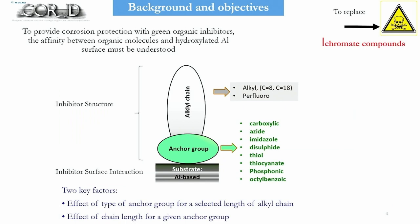For the M-ERANET project, our aim was to screen several families of potential inhibitors. We started from a very simple idea: we have the metal, which can be oxidized, and we have an anchor group — a chemical function responsible for attachment and anchoring to the surface — and then we have an alkyl chain responsible for forming a self-assembled layer to protect the metal from entry of corrosive species. We studied the key factors of the anchor group, its effect on adsorption and inhibition, and the effect of chain length.